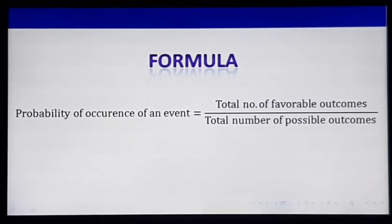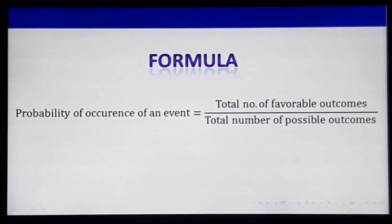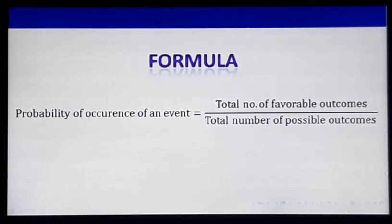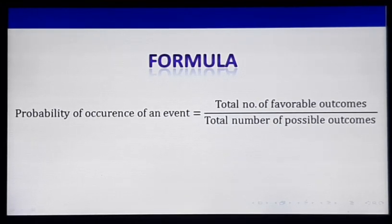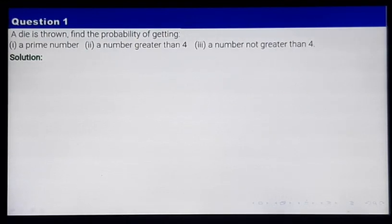Probability of occurrence of an event — event means what you want to have, that is your desire. It will be given by total number of favorable outcomes, divided by total number of possible outcomes. This is the formula. We'll see how to apply the formula through a very simple problem, that is question number 1.